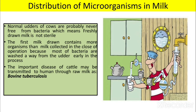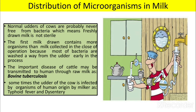An important disease of cattle that may be transmitted to humans through raw milk is bovine tuberculosis. Sometimes the udder of a cow is infected by organisms of human origin through the milker, such as typhoid fever and dysentery.